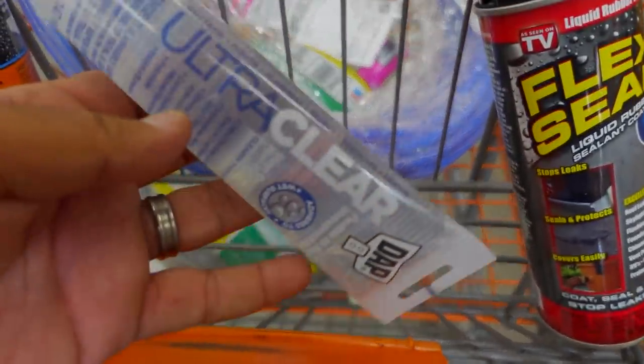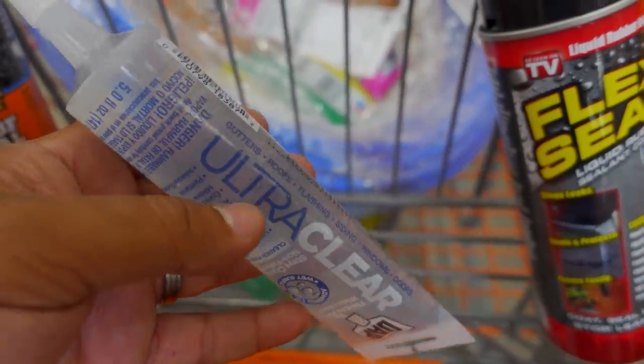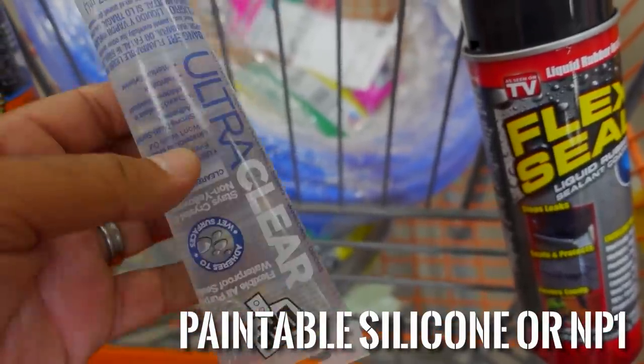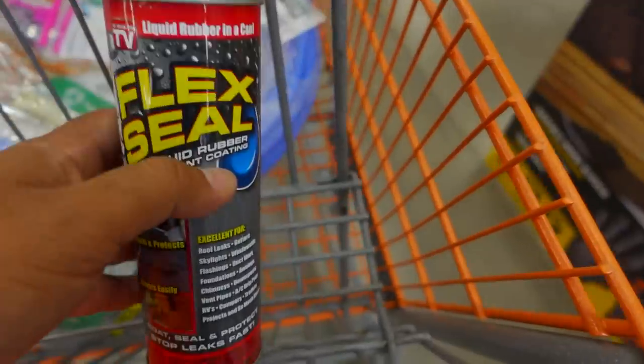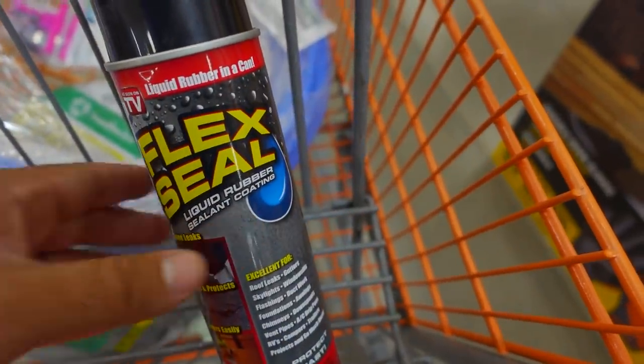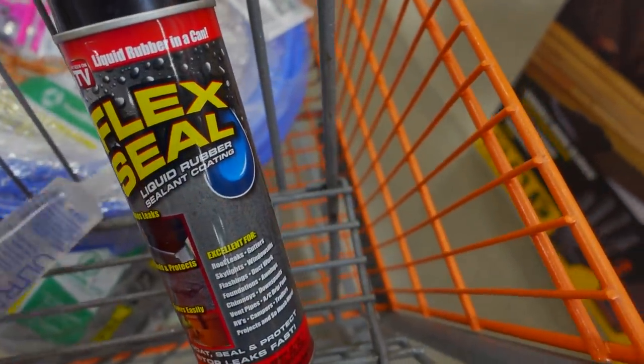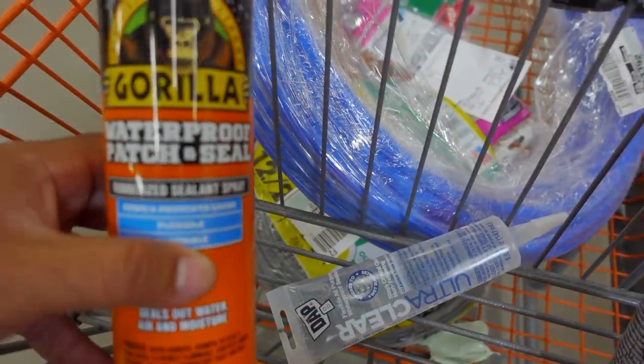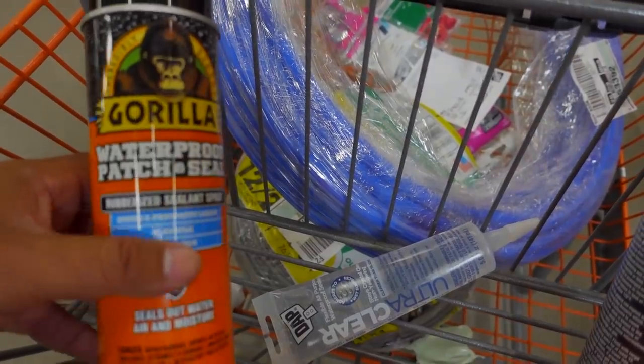All right, so the electrical boxes we always use clear silicone to seal them really well before we foam so the foam doesn't shoot out. But today I'm going to try Flex Seal, see how that works. And as I was looking at the Flex Seal, I noticed Gorilla also has something similar.